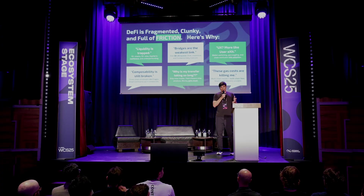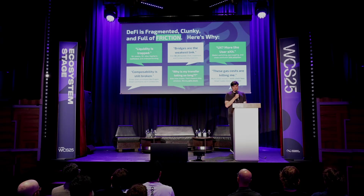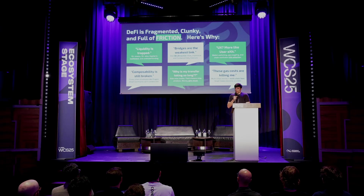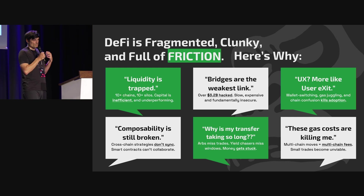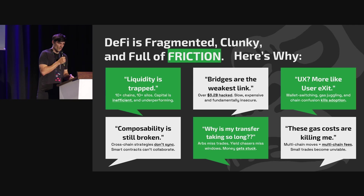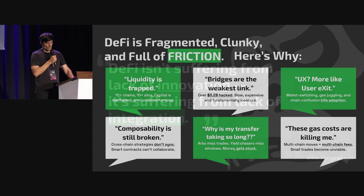The UX is terrible — whenever you try to bridge something from one chain to another it takes forever, costs a bunch, and makes you want to quit. Composability is broken: you cannot interact with smart contracts on other chains, transfers take long, and at some point gas costs become super expensive, making all cross-chain interactions extremely inefficient.